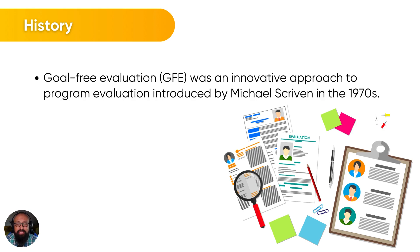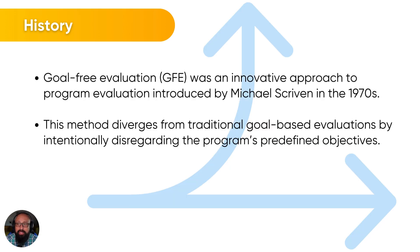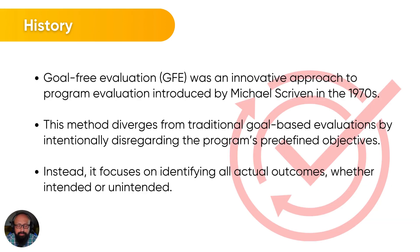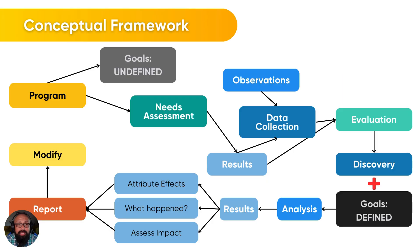A little bit on the history: this was a method proposed back in 1974, mid-70s. Michael Scriven came out with goal-free evaluation. It was, at that point, an innovative approach to evaluate programs. It was a method that diverged or separated somewhat from traditional goal-oriented methods. Instead, this new method focused on identifying all actual outcomes, whether they're intended or not.